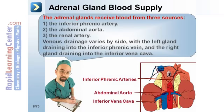The adrenal glands receive blood from three sources: one, the inferior phrenic artery; two, the abdominal aorta; and three, the renal artery. Venous drainage varies by side, with the left gland draining into the inferior phrenic vein, and the right gland draining into the inferior vena cava.